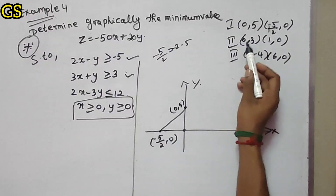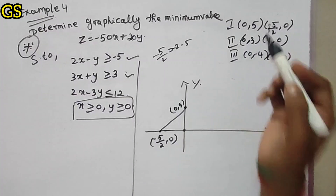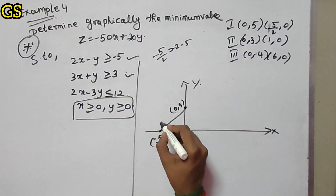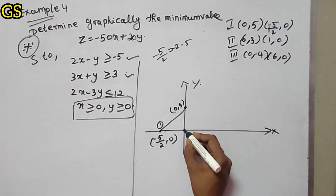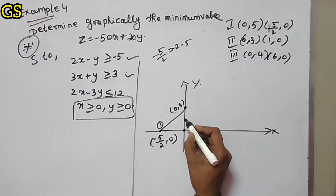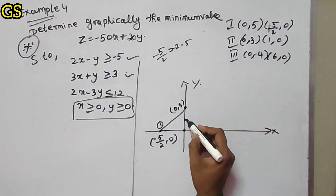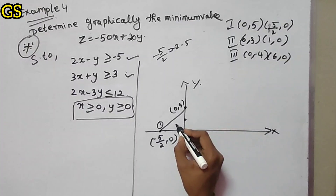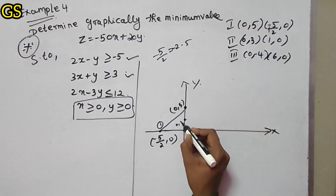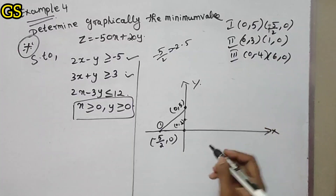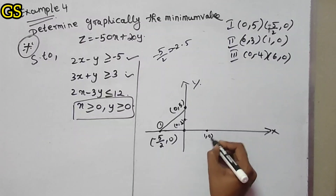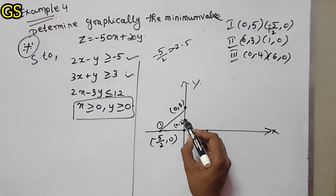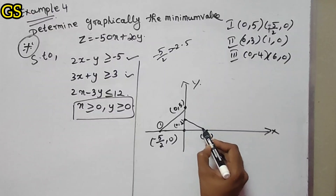Next, for the second constraint, the points are (0, 3) and (1, 0). The x-axis intercept is 1 and the y-axis intercept is 3. So (0, 3) and (1, 0) form the second constraint line.